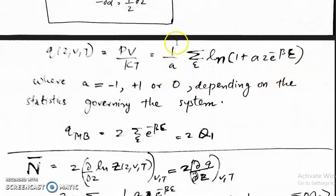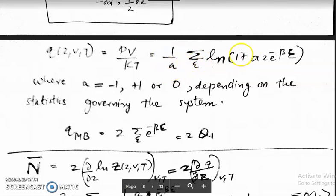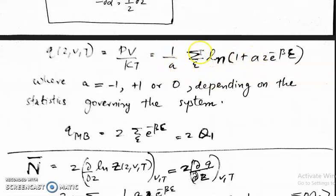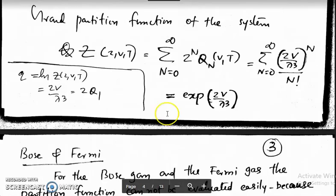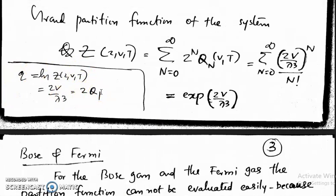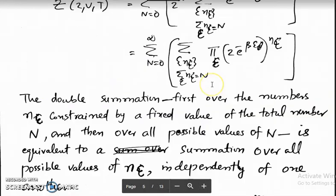When you put a = +1, this will be positive — you have Σ_ε log(1 + z·e^{−βε}), which is for the Fermi-Dirac case. And for the Maxwell-Boltzmann case, the Q potential is z·q₁, where z·q₁ is the single-particle partition function.